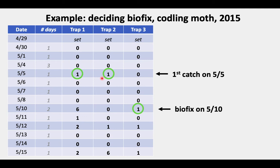Then on the 5th of May, we had our first catch in two traps — just a single moth. That didn't seem like a convincing biofix. There were three more days with all zeros. And then on the 10th of May, it had been two days since we checked. There were six and zero and one. So I felt that looked like biofix — I called biofix as the 10th of May that year.